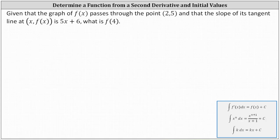Let's begin by listing out all the given information. If f of x passes through the point (2, 5), this indicates that f(2) equals 5.